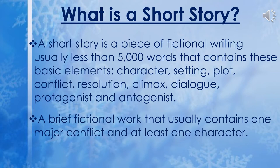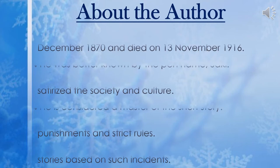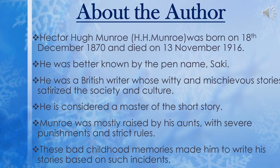These are the basic things you should know before studying a short story. Now let's move on to know about the author Hector Hugh Munro. His actual name is Hector Hugh Munro, also written as H.H. Munro. He was born on 18th December 1870 and died on 13th November 1916. He was born in Burma but died in France, though he is considered British because of his family background.